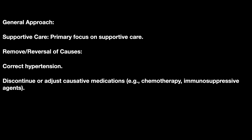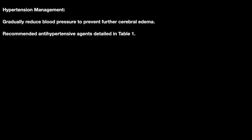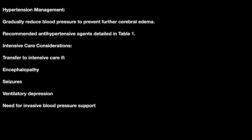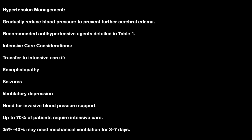Once a diagnosis of PRES is made, the acute management general approach is: remove reversible causes, correct hypertension, discontinue or substitute implicated medications such as chemotherapy or immunosuppressive therapy, hydrate the patient, and correct electrolyte imbalances. For hypertension management, gradually reduce blood pressure to prevent further cerebral edema. Transfer to the intensive care unit is indicated for encephalopathy, seizures, ventilatory depression, or need for invasive blood pressure management. Up to 70% of patients require intensive care; 35% to 40% require ventilation for up to 3 to 7 days.